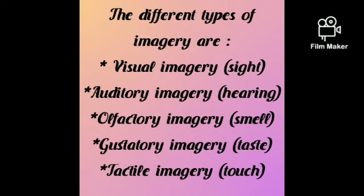The different types of imagery are: visual imagery related to sight, auditory imagery related to hearing, olfactory imagery related to smell, gustatory imagery related to taste, and tactile imagery. So basically imagery uses these five types of senses.